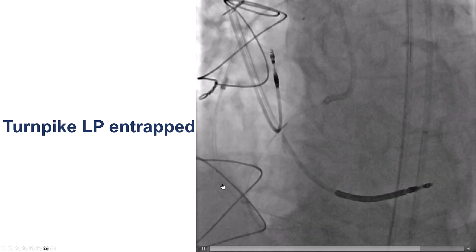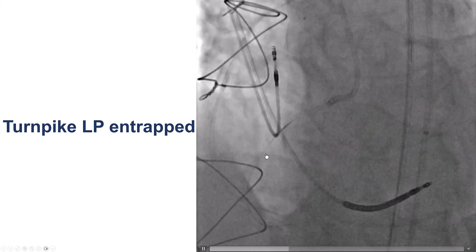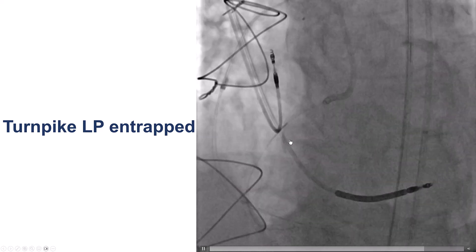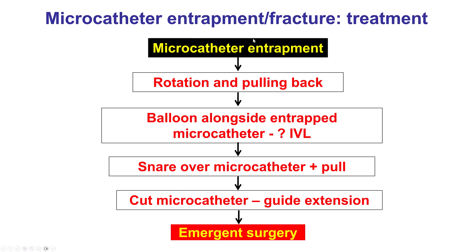Why couldn't it move back? There is a lot of tortuosity going retrograde through the saphenous vein graft and the distal touchdown, and there could be friction between the wire and the microcatheter. We had an example of microcatheter entrapment. The first step is to gently rotate and try to pull it back, which did not work. The next step is to place a balloon next to it and perform balloon inflations, potentially using intravascular lithotripsy in heavily calcified vessels. If this doesn't work, advance a snare around the microcatheter and pull everything out. If all else fails, one can cut the microcatheter, advance the guide extension — though advancing retrograde was difficult due to tortuosity — and if all of this fails, emergency surgery might be required.